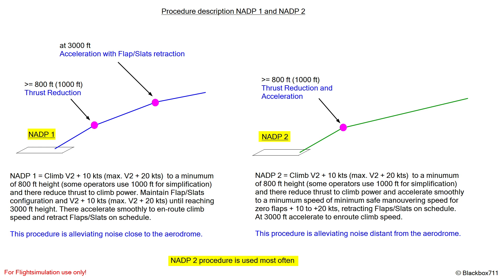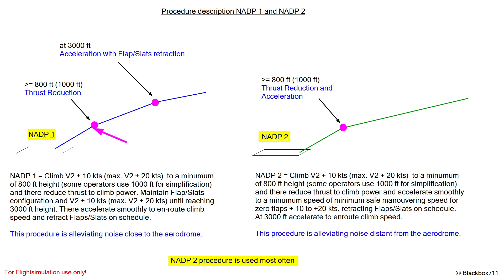With the NADP-1 Noise Abatement Departure Procedure, you initially climb out at V2 plus 10 up to V2 plus 20 knots to a minimum height — and I say height above the departure airport runway — of 800 feet. Some operators use 1000 feet; ours, for example, uses 1500 feet. ICAO just recommends the lowest height should be 800 feet.